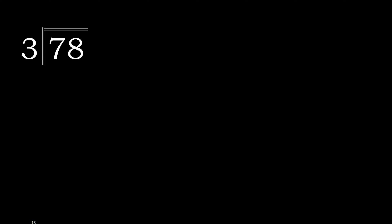78 divided by 3. Here, 7 — 7 is not less than 3, therefore 3 multiplied by which number is nearest to 7 but not greater.